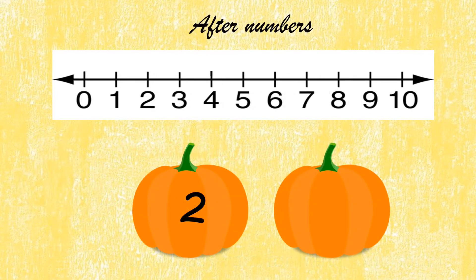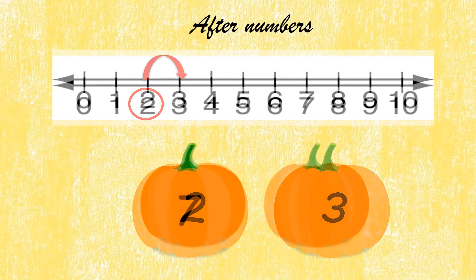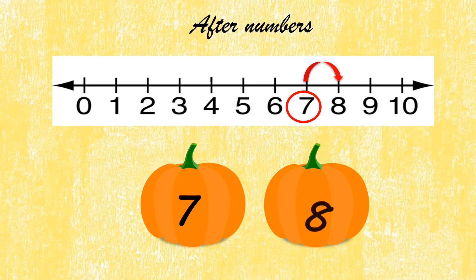After number: the number is 2. Identify 2 on the number line, jump forward — the after number is 3. The number is 7. Identify 7 on the number line, jump forward.